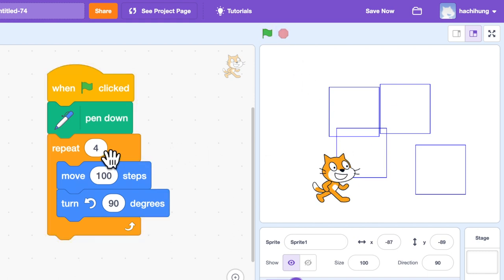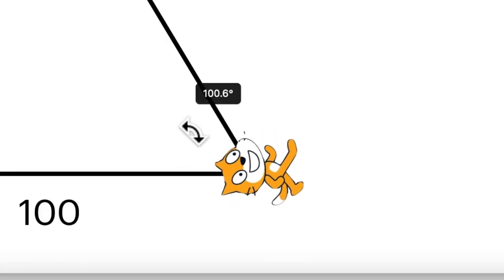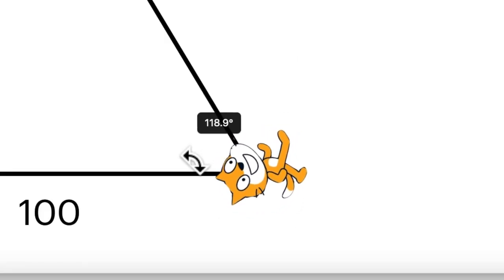So how can we modify or change this program so that it will draw an equilateral triangle in this way? Suppose we kept the side length of the triangle to be 100 steps, then we can move from left to right in this way. As we can see, the main difference of drawing a triangle instead of a square is that the cat has to rotate by a different turn angle in an anti-clockwise direction.